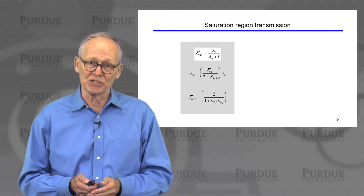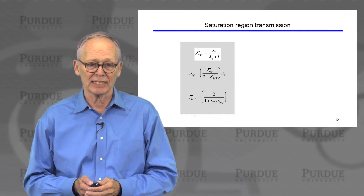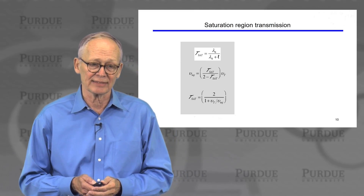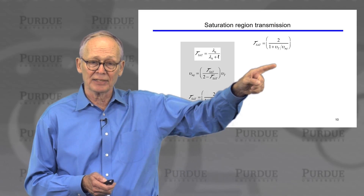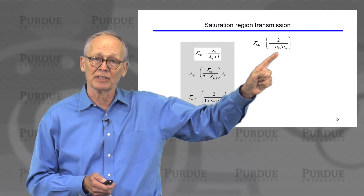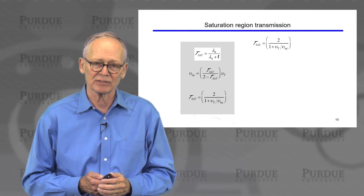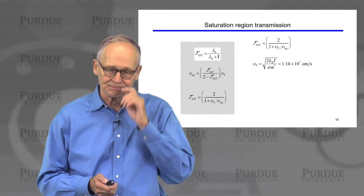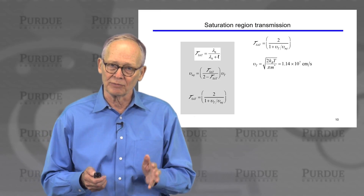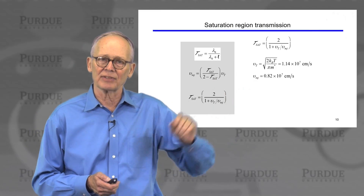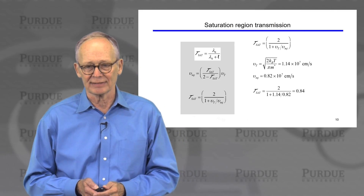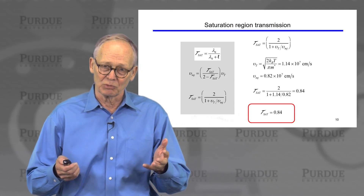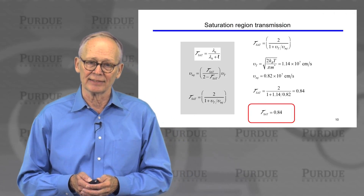In the saturation region, we have an expression for the transmission in the saturated regime and an expression relating that transmission to the injection velocity deduced from the fitting process. If we know the thermal injection velocity — which we can compute with reasonable accuracy — and the injection velocity determined from fitting, we can deduce the transmission. The injection velocity for this device is 1.14 × 10⁷ cm/s, and the injection velocity deduced from fitting was 0.82 × 10⁷ cm/s. The transmission in saturation is therefore 84%.